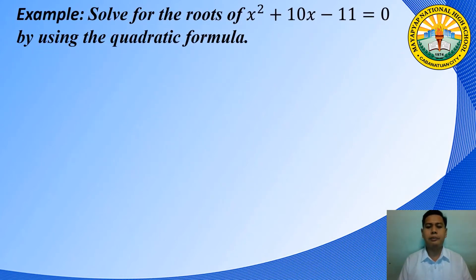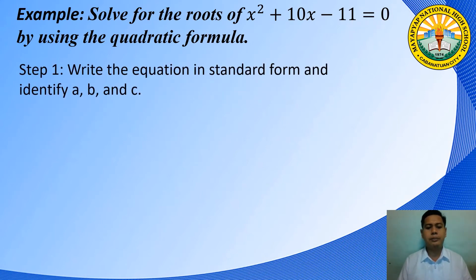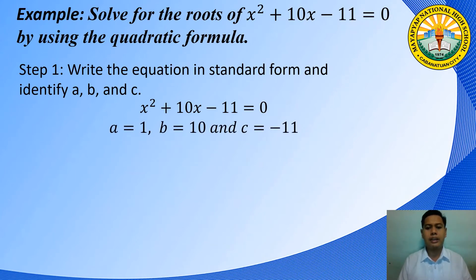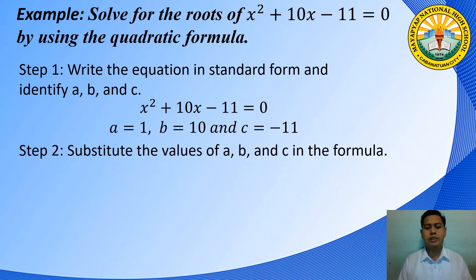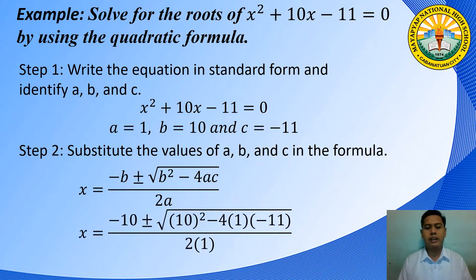Let's have an example. Solve for the roots of x squared plus 10x minus 11 equals 0 using the quadratic formula. Step 1: write the equation in standard form and identify A, B, and C. The equation is already in standard form, and the values are A equals 1, B equals 10, and C equals negative 11. Step 2: substitute the values into the formula. X equals negative 10 plus or minus the square root of 10 squared minus 4 times 1 times negative 11, all over 2 times 1.